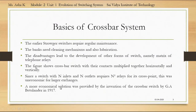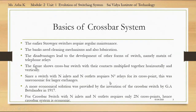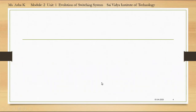Hence a more economical solution was provided by the invention of the crossbar switch by G.A. Bettelander in 1917. For a crossbar switch with n inlets and n outlets, only 2n cross points are required. Hence the crossbar system was economic.